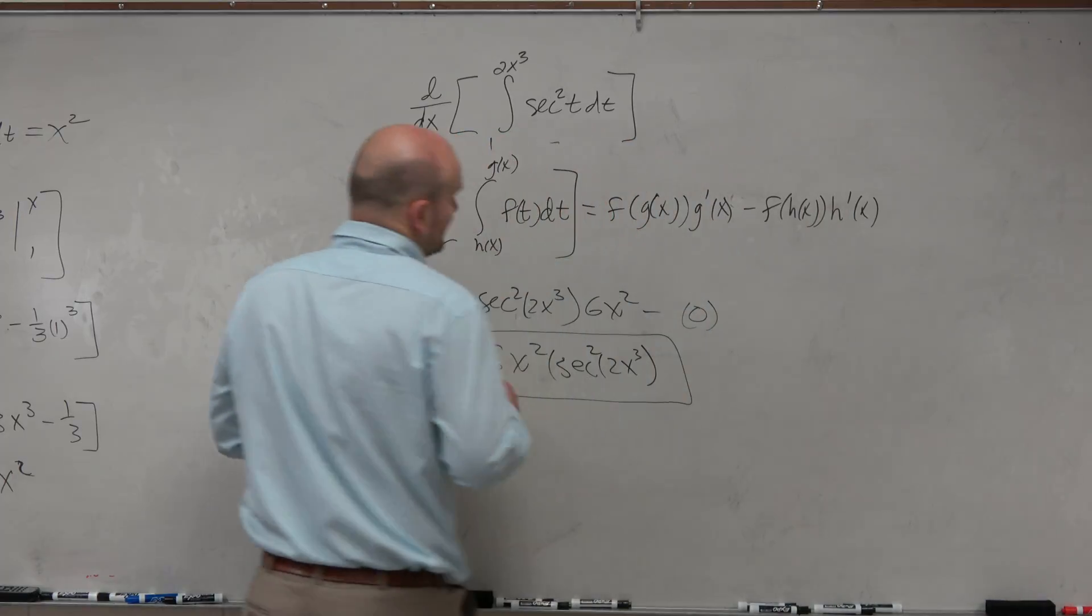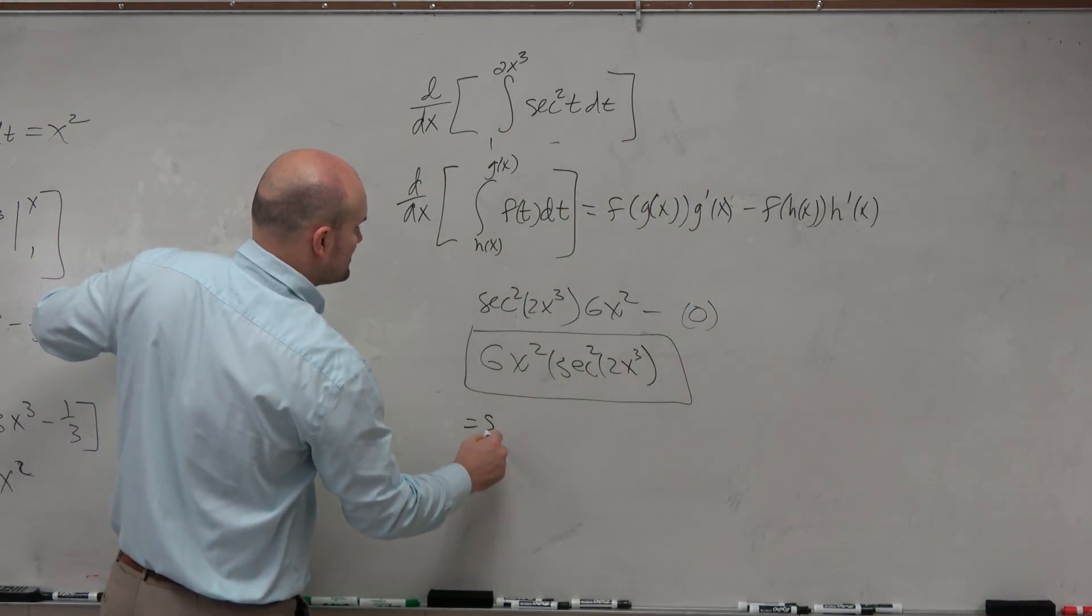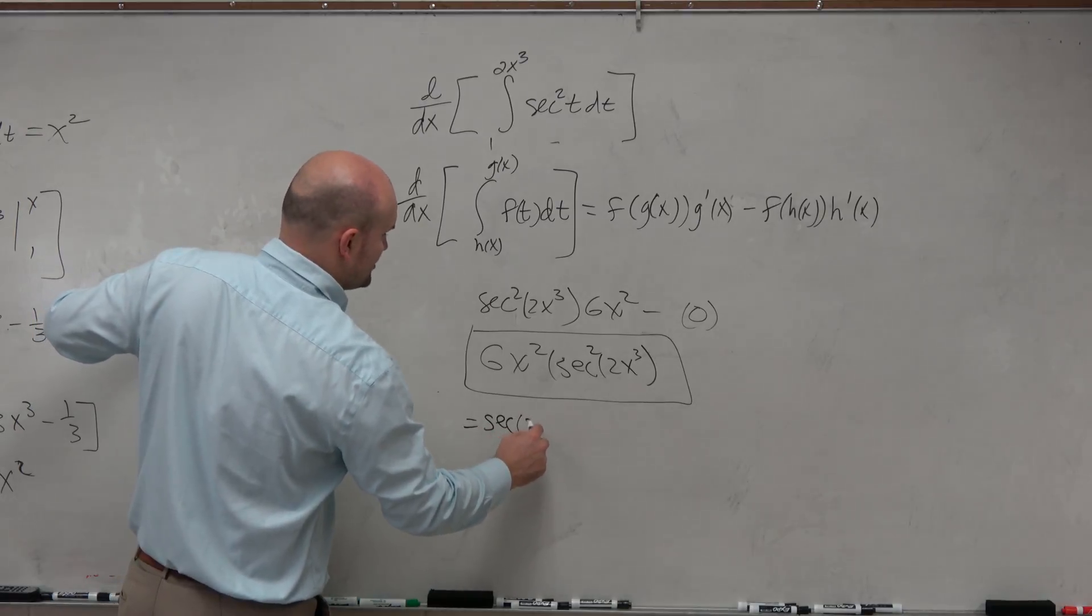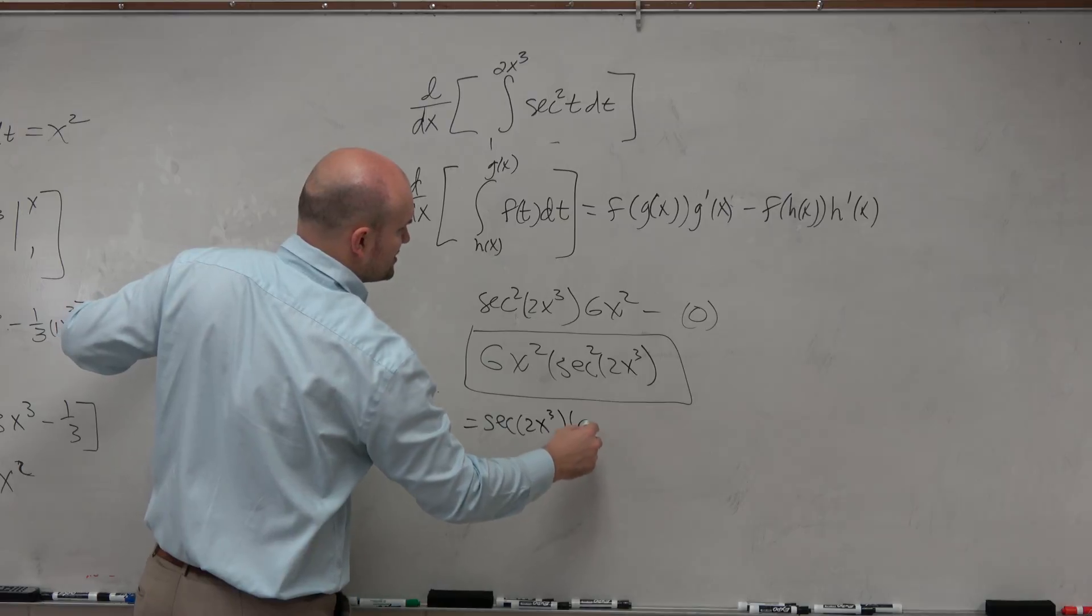So if we look at it that way, let's kind of do this. Let's do it for this function. So we have secant squared of 2x cubed times the derivative of 2x cubed, which is 6x squared,